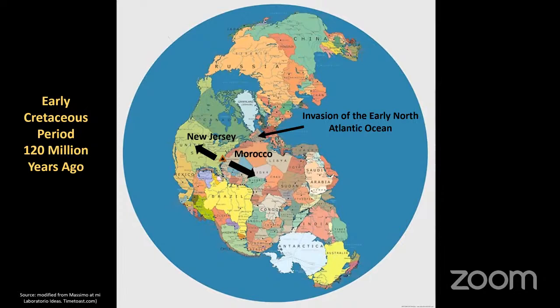Plate tectonics began to split this plate apart, and the area of Africa started to split from the area of North America. It's really funny to think that you could take a bridge back then from Jersey to Morocco — they were right next to each other. What happened was the split, or rift, that formed between them started to tear this piece away from that piece.